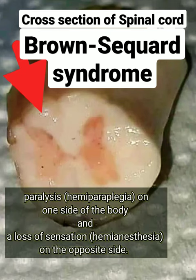So we see here that there is paralysis, or hemiparaplegia, on one side of the body, and a loss of sensation, or hemianesthesia, on the opposite side. That was Brown-Séquard syndrome.